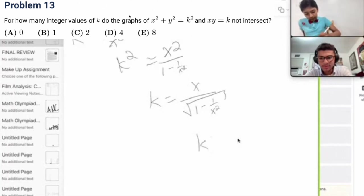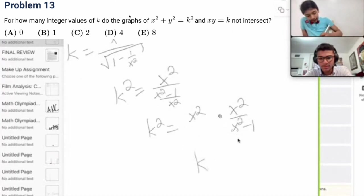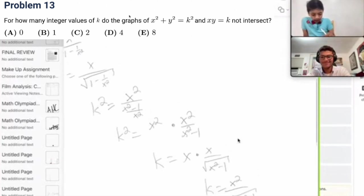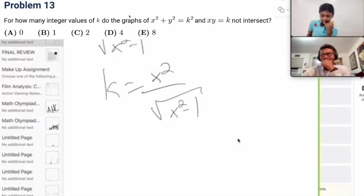Well, let's take a look at it. So, k squared equals x squared over x squared minus 1 over x squared. So, k squared equals x squared times x squared over x squared minus 1. So, k is equal to x times x divided by the square root of x squared minus 1. Okay, that's not so bad. So, for how many integers k does this not work?